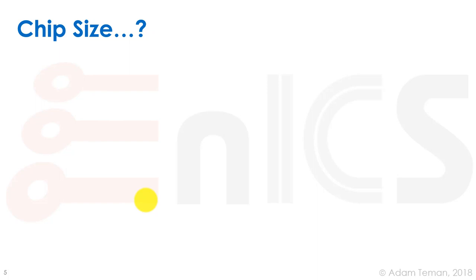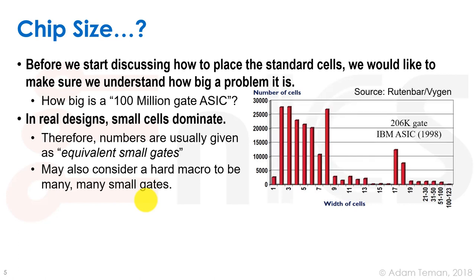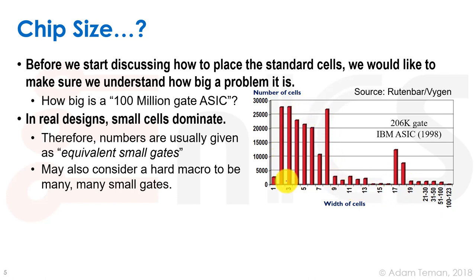Before discussing how to do placement, a short question: when people say 'chip size,' what are they talking about? Looking at a real 206,000-gate IBM ASIC, a histogram of cell sizes shows that small cells dominate. There are very few tiny cells, a ton of small cells, and very few big cells. The large ones are probably macros or IPs. But most cells really are small.